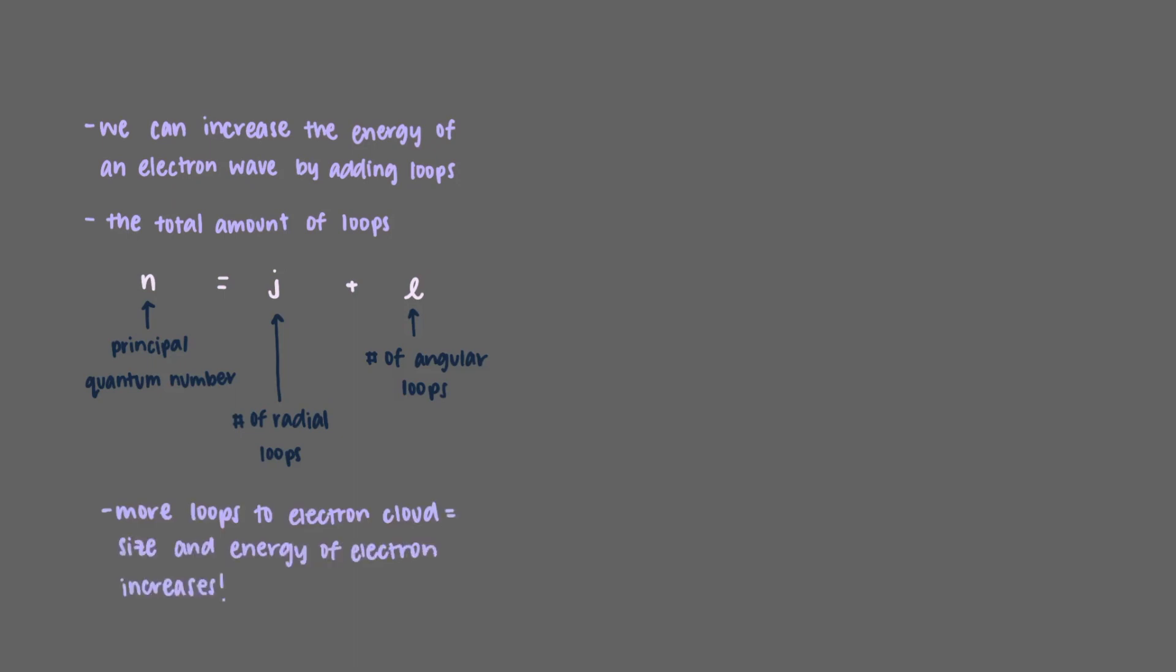We know that we can increase the energy of an electron wave by adding loops. The total amount of loops, known as the principal quantum number n, is equal to the sum of the radial loops j and angular loops l. As we add more loops to our electron cloud, the size and energy of the electron increases.